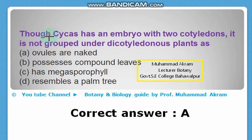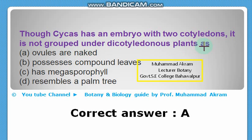Cycas has an embryo with two cotyledons, yet it is not grouped under dicotyledonous plants. The correct reason is option A — ovules are naked. Due to naked ovules, Cycas is not grouped under dicotyledonous plants.